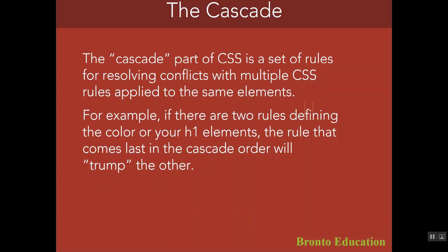The cascading part of CSS is a set of rules for resolving conflicts when multiple CSS rules apply to the same element. For example, if there are two rules defining the color of your h1 element, the rule that comes last in the cascade order will take effect. So if you change h1 color to blue, then to gray, and then to red, the last one — red — is what will be applied.